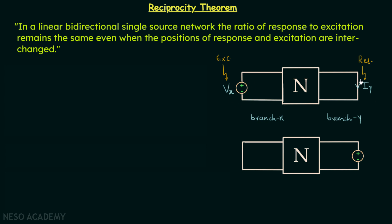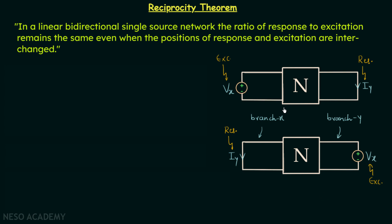So we have the same network, and this time in branch Y we are going to have voltage source V_x, and in branch X we are going to have current I_y. Here we have V_x as the excitation and I_y as the response, and the ratio of response to excitation will be I_y over V_x.